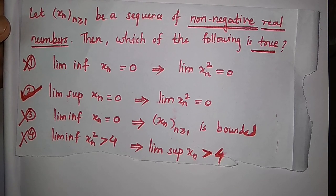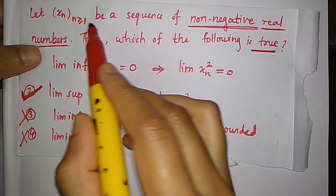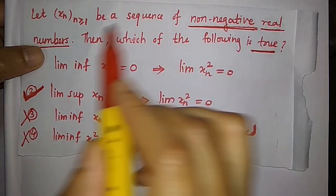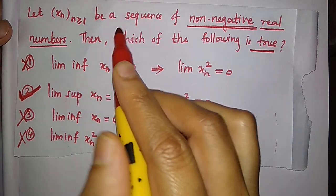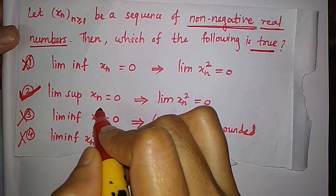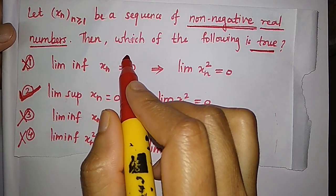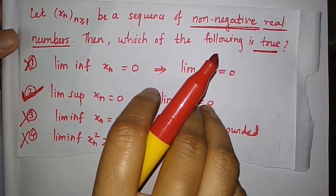Hello friends, in this video I am going to solve a question from NET 2019 December. The question is about sequences — we are given a sequence of non-negative real numbers and asked to identify the true statements from the following options. The question is from Part B, so only one option is correct.